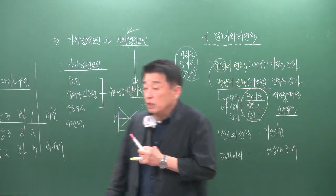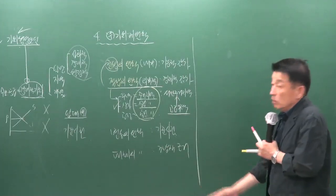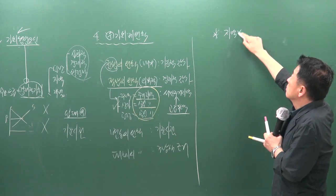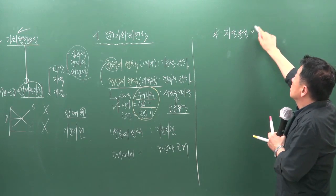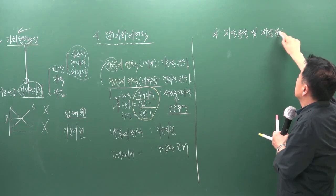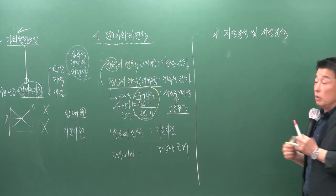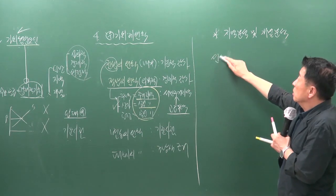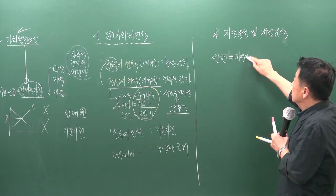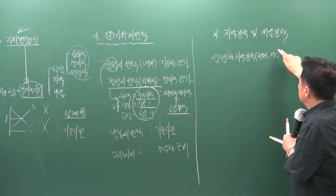가치이론 정리 후 지역 분석과 개별 분석을 살펴봅니다. 지역 분석은 선행 분석으로, 전체적·거시적 분석입니다. 지역의 표준적 이용을 토대로 대상 부동산의 가격 수준을 판정하는 역할을 합니다.